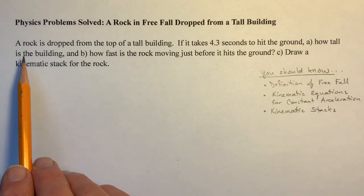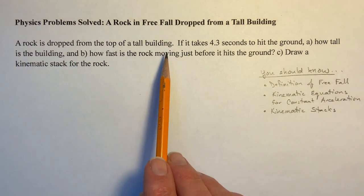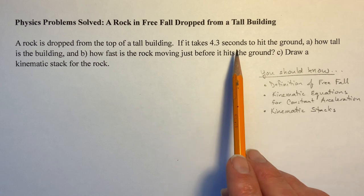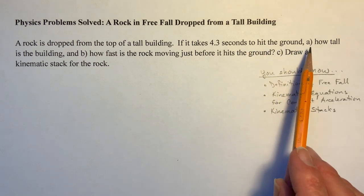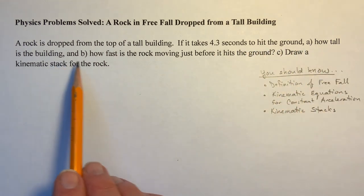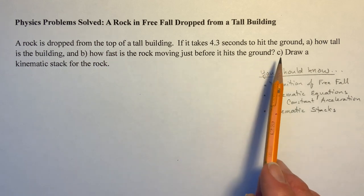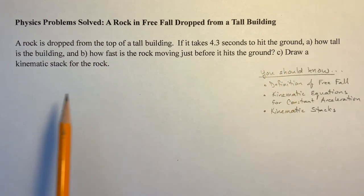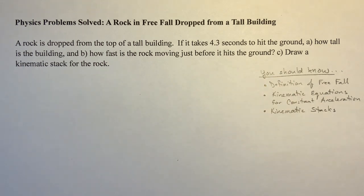We have a rock and it's dropped from the top of a tall building. If it takes 4.3 seconds to hit the ground, how tall is the building and how fast is the rock moving just before it hits the ground? And then draw a kinematic stack for the rock.